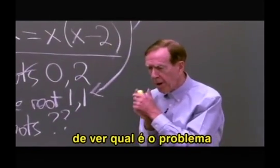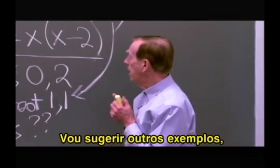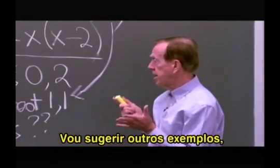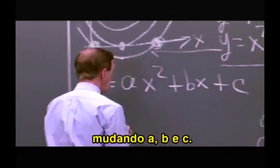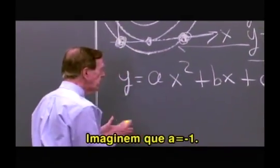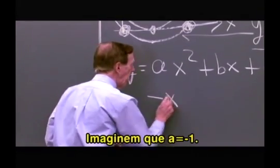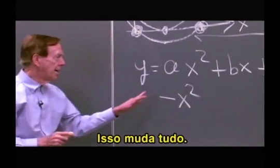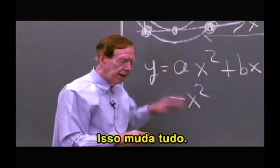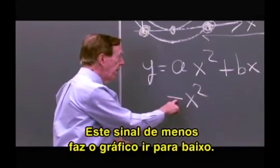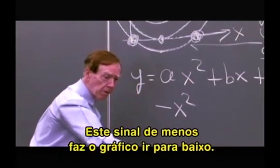Let me suggest some other examples with different a, b, and c. Suppose I take a to be minus 1. That will change the picture completely. With that minus sign, my quadratic is going to go downwards — like throwing a ball in the air and having it come down.